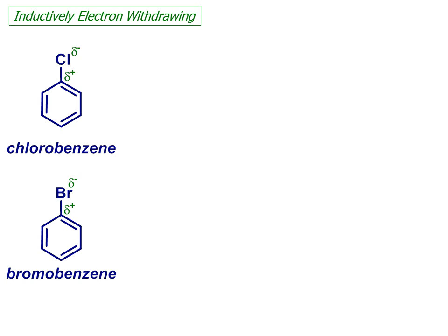That is to say they pull electron density away from the aromatic system through the carbon-chlorine or carbon-bromine bond. This means they are deactivating. They slow the rate of electrophilic aromatic substitution relative to benzene itself.